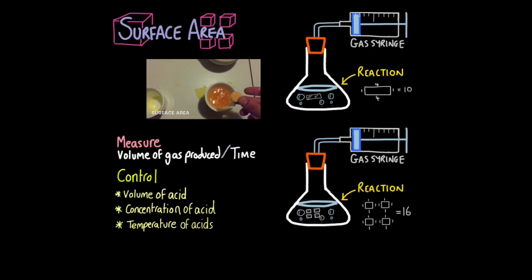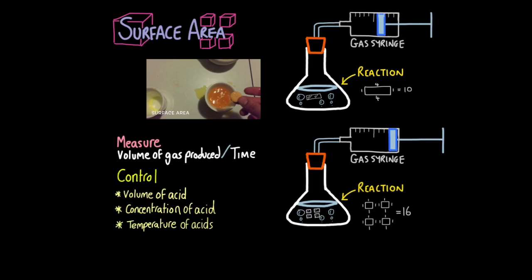Just like before, you're measuring the volume of gas produced over time. Where you have the largest surface area, you expect the reaction to occur faster — more gas produced in the same amount of time. Make sure you control the volume of acid, concentration of acid, and the temperature, because that also affects the rate of reaction. Both experiments must occur at the same temperature.